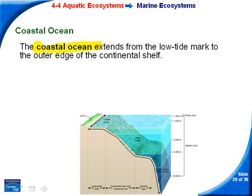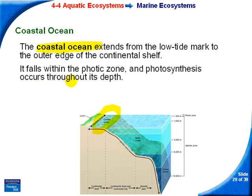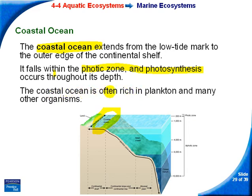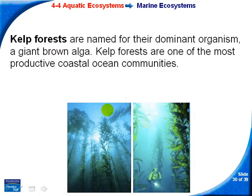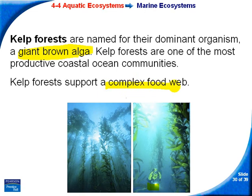The coastal ocean extends from the low tide mark out to the edge of the continental shelf. This area always receives sunlight, producing a lot of photosynthesis, plankton, and many other organisms in its food webs. A special feature of the coastal ocean is kelp forests, dominated by giant brown kelp. These are amazing, complex communities that support a large diversity of organisms including seals.